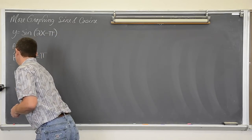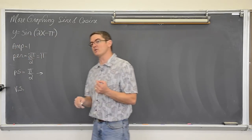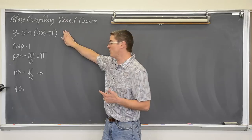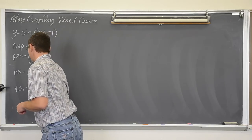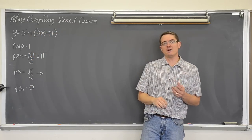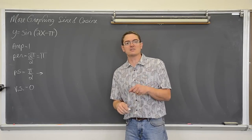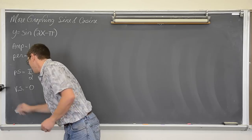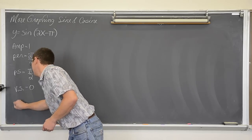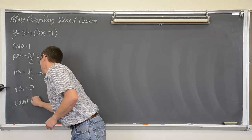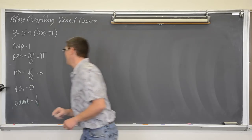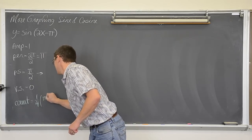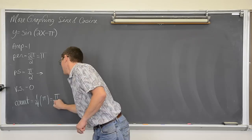Our vertical shift, which I am going to write as VS, comes from a plus or minus constant at the end of the equation, so our vertical shift is zero. Now if we are doing this without a calculator, we need to know what we are going to count by. That is going to be one quarter of the period, so we are going to count by one quarter of π, which is π over 4.